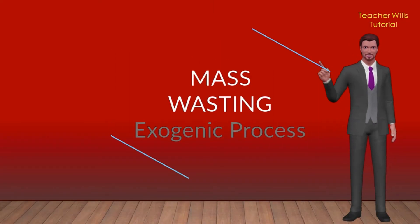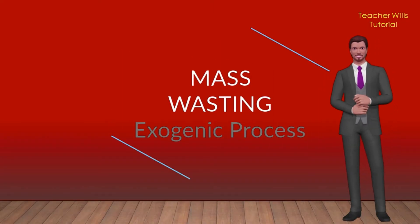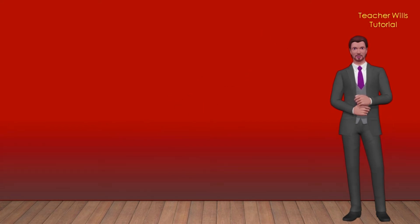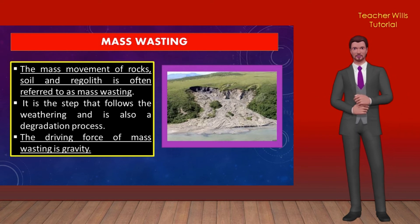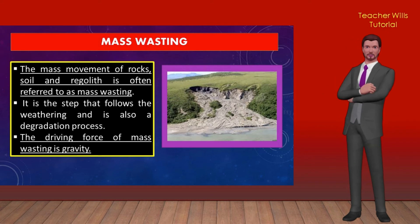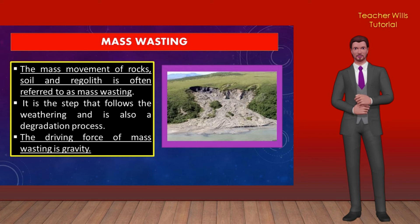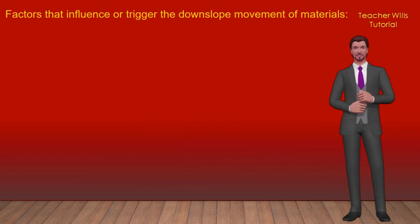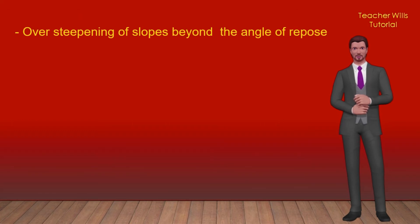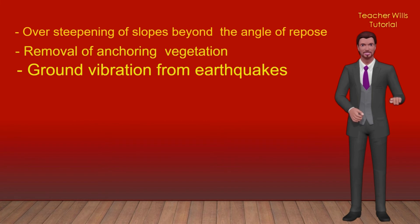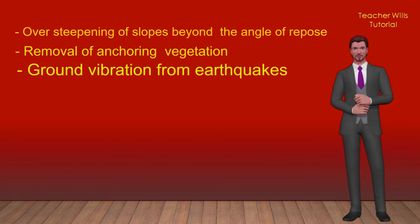The next type of exogenic process is mass wasting. The mass movement of rocks, soil, and regolith — rock and mineral fragments from weathering — down slopes is referred to as mass wasting. It is the step that follows weathering and is also a degradation process. The driving force of mass wasting is gravity. Factors that trigger the down-slope movement include over-steepening of slopes beyond the angle of repose, removal of anchoring vegetation, and ground vibration from earthquakes.